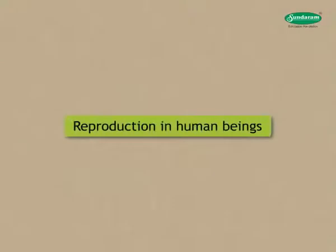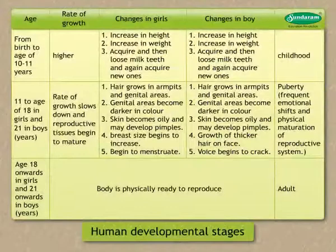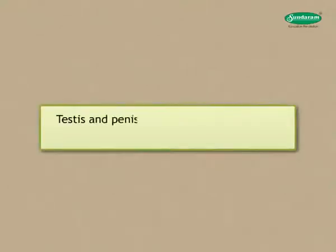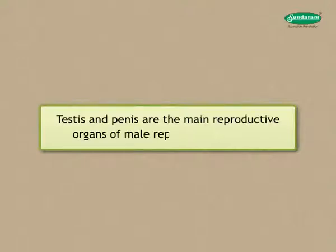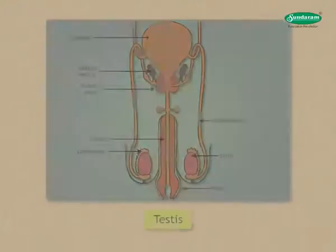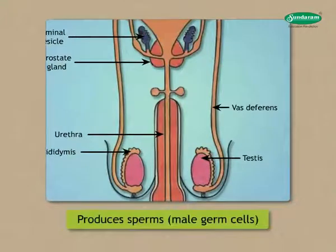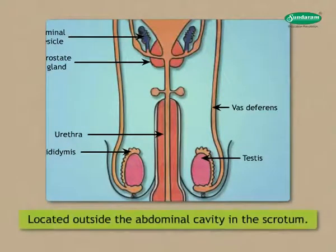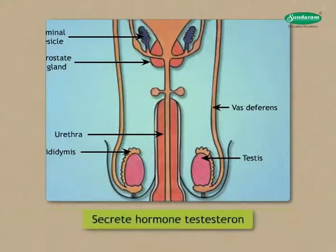How does reproduction in human beings take place? Observe the table showing human developmental stages. The testes and penis are the main reproductive organs of the male reproductive system. Testes produce sperm, the male germ cells. As formation of sperm requires temperature lower than normal body temperature, the testes are located outside the abdominal cavity in the scrotum.